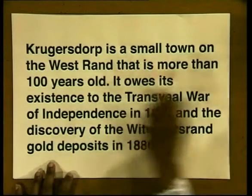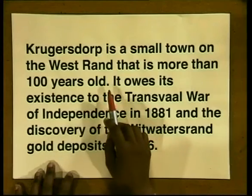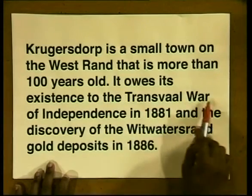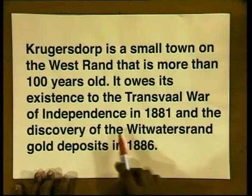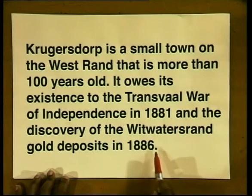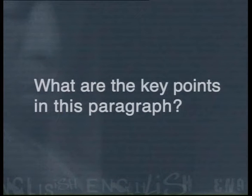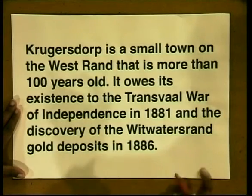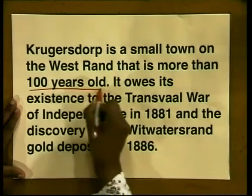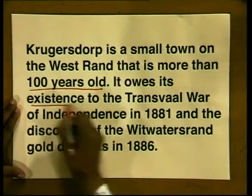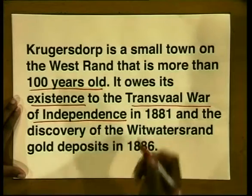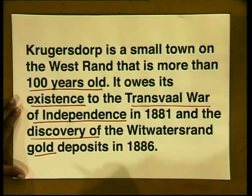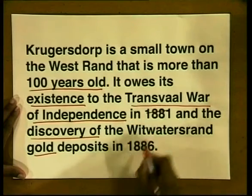As we read through the next paragraph, let's see if you can work out how to condense it. Krugersdorp is a small town on the west rand that is more than 100 years old. It owes its existence to the Transvaal War of Independence in 1881 and the discovery of the Witwatersrand gold deposits in 1886. What are the key points? You should have zoned in on the fact that the town is 100 years old and it owes its existence to the Transvaal War of Independence and the discovery of gold. We wouldn't include the dates, because these are unnecessary details.